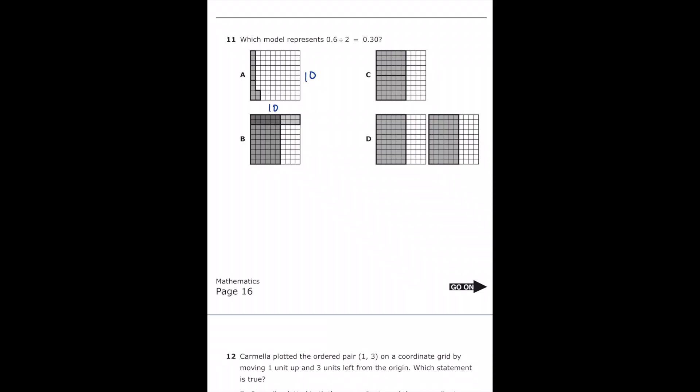So letter A, we have 1, 2, 3, 4, 5, 6, and then 1, 2, 3, 4, 5, 6. But each of those squares is a hundredth, right? So that's actually 0.06 and 0.06. So that's actually going to be too small for this question.